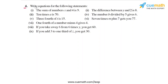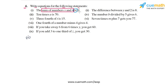In question 4 we have to write equations for all the given statements. Let's start with part 1. The statement says the sum of numbers x and 4 is 9. The word 'is' means equal to in the equation. If you look at what you have on the left of this word, you have the sum of numbers x and 4, so this gives you the LHS, and this is equal to 9, which gives you the RHS.